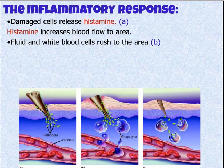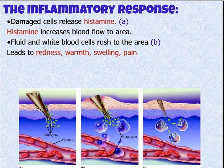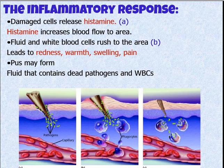When histamine causes blood flow to increase, fluid and white blood cells rush to the area. You might think you'd want blood flow to decrease if you have a cut, but it's actually the opposite — we want increased blood flow so white blood cells can go there and kill any pathogens. This leads to the sensation of warmth, swelling, pain, and redness — the inflammatory response you might experience after a paper cut or skinning your knee. Pus might form, which is a good and bad sign: it indicates infection, but it's what the body is supposed to do — white blood cells cleaning out dead pathogens.